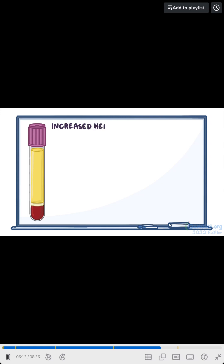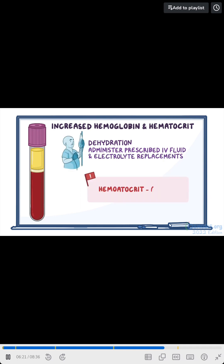If your client has an increased hemoglobin and hematocrit, and is also experiencing dehydration, administer the prescribed IV fluid and electrolyte replacements. If the hematocrit is above 65%, notify the healthcare provider, as this is a critical level.